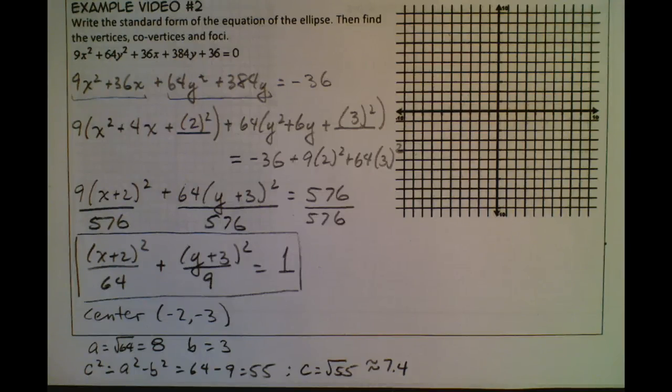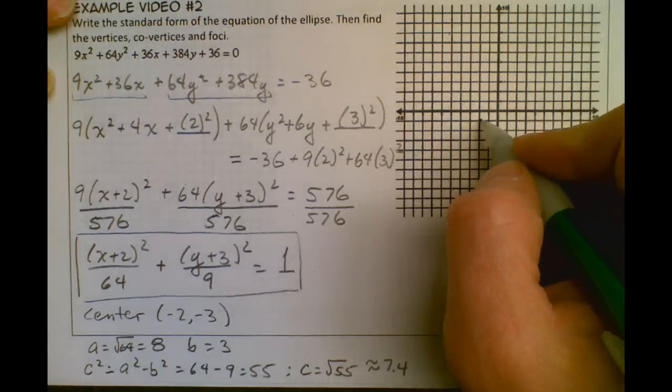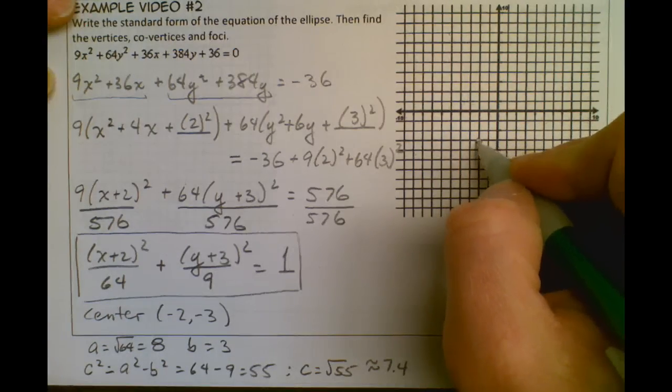Okay, now that we have all this stuff, let's go ahead and start graphing everything, and we can find our vertices and co-vertices and foci. So I know my center is at (-2, -3), so here's my center.